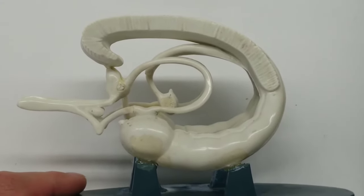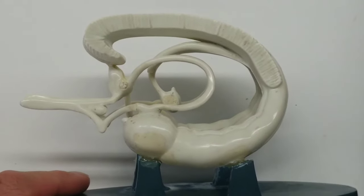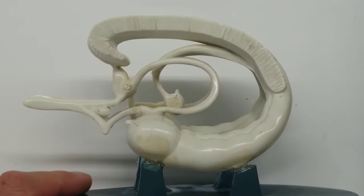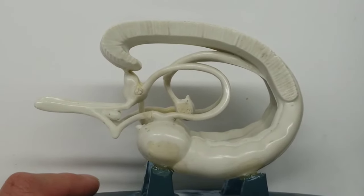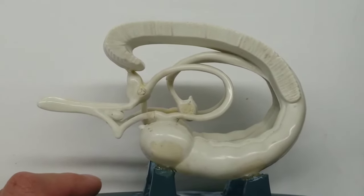Specifically what this model shows really nicely is the limbic system. The limbic system is a bunch of these brain regions that are generally important for learning, memory, and emotion.